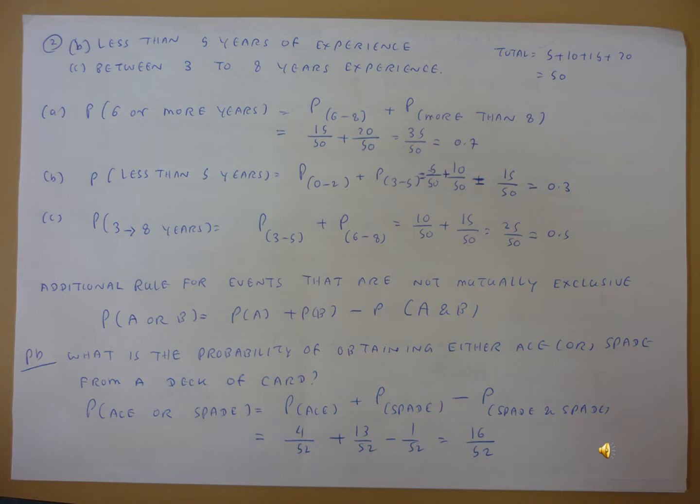In this case, six to eight year experience wearers are 15 people, and more than eight year experience wearers are 20. The probability of six to eight years experience will be 15 divided by the total number of wearers, which is 50.